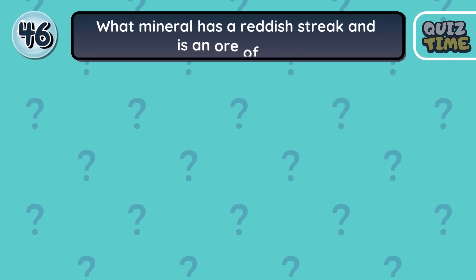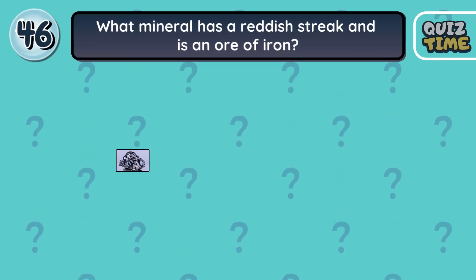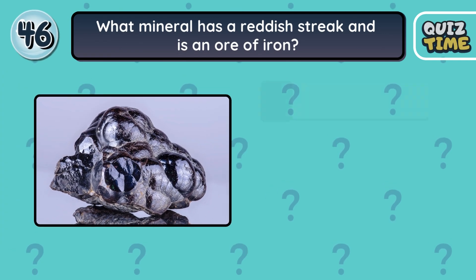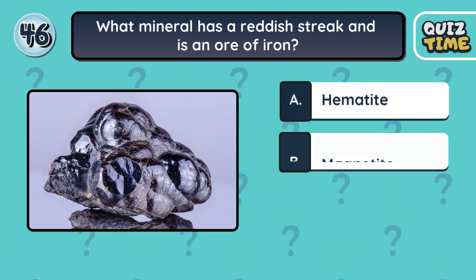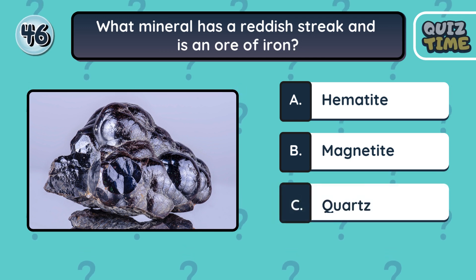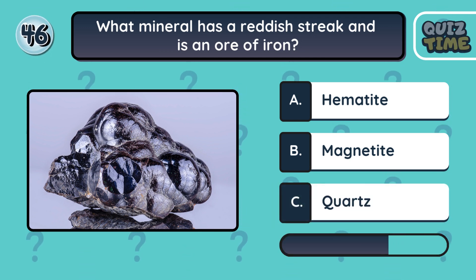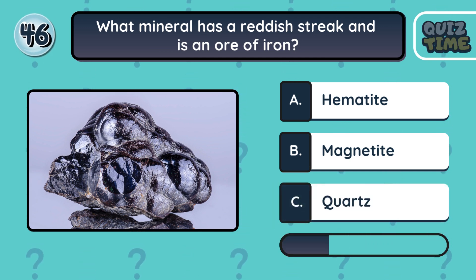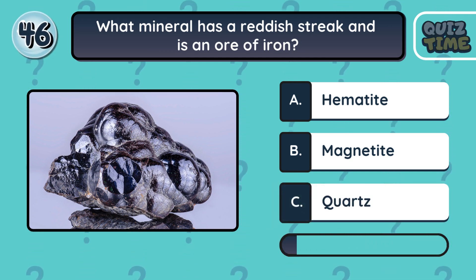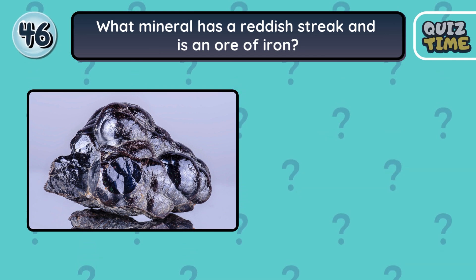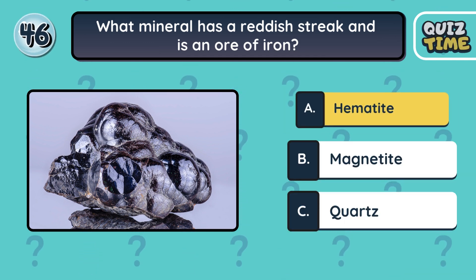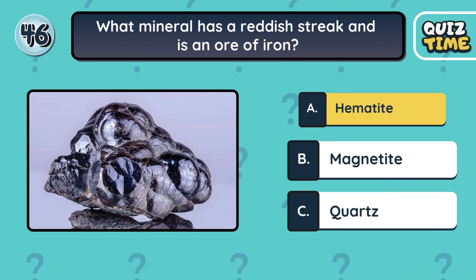Number 46. What mineral has a reddish streak and is an ore of iron? A. Hematite. B. Magnetite. C. Quartz. The correct answer is A. Hematite.